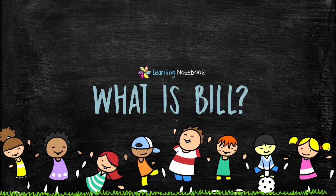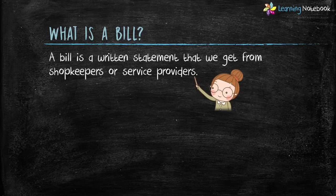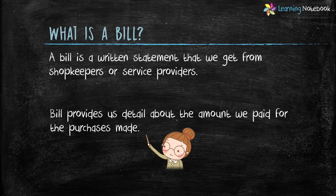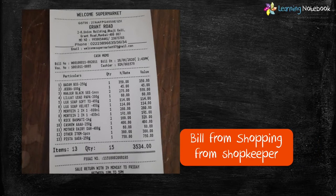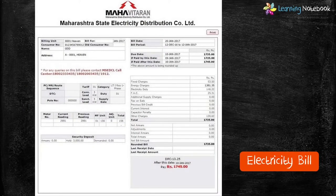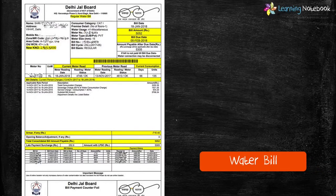Let's start and first understand what a bill is. A bill is a written statement that we get from shopkeepers or service providers. A bill provides us details about the amount we paid for purchases made. For example, we get a grocery bill from the shopkeeper, an electricity bill from the electricity board, and a water bill for using water. These are all examples of bills we get for purchasing goods or for services used.